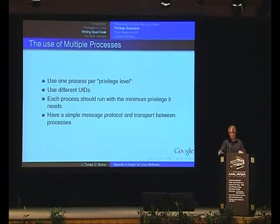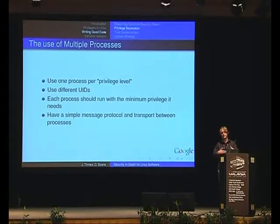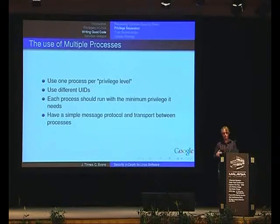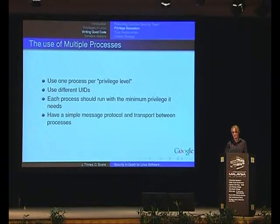Obviously, these two processes — the trusted end and the untrusted end — are going to have to communicate with each other. You want to keep that communication simple, both in the messages going back and forth and the way those messages are transmitted. Otherwise, the more complicated that is, the more chances there's going to be a buggy interaction between your trusted and your untrusted end.